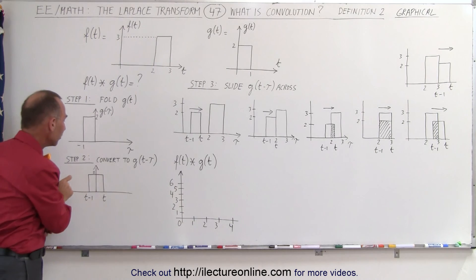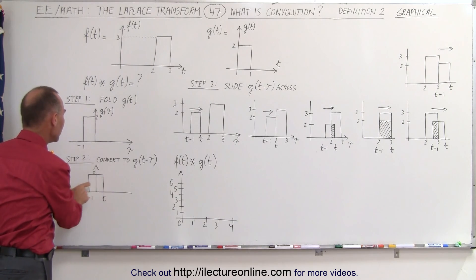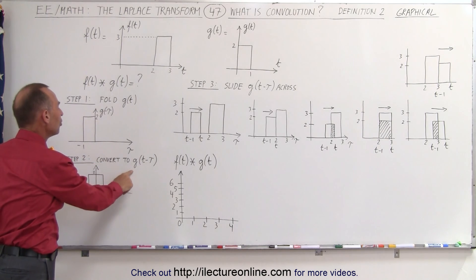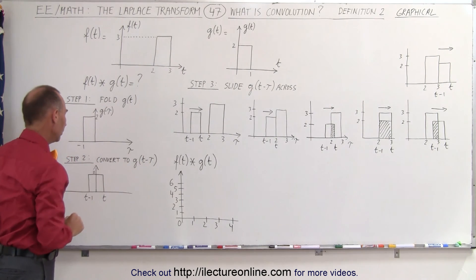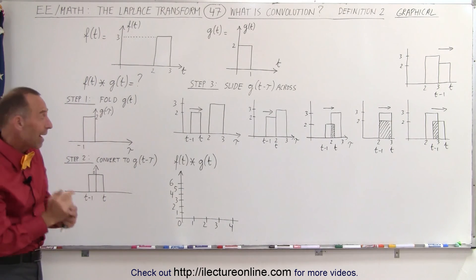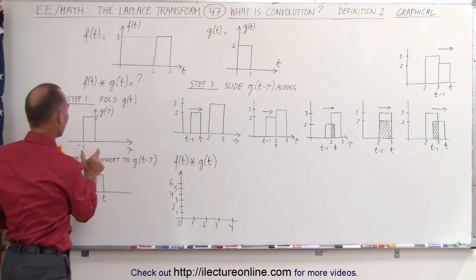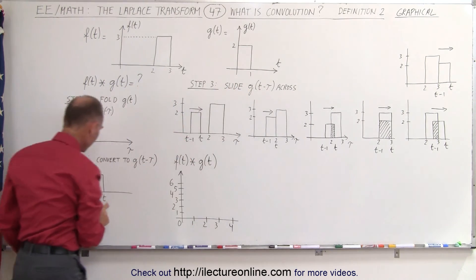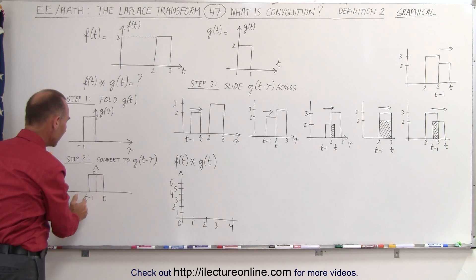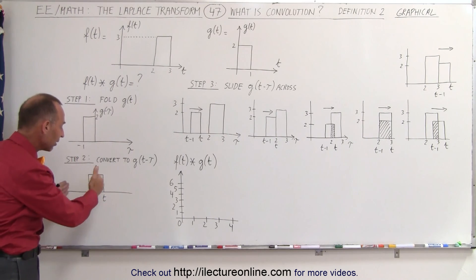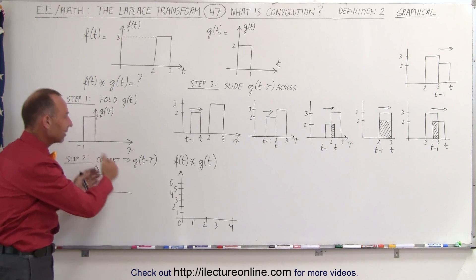Next, we're going to begin to slide g of t across. We're going to convert the function to g of t minus tau, in such a way that the front end is t, and the back end is t minus 1, since the width is only equal to 1. The front end is going to be t and the back end is going to be t minus 1. And t, of course, is a constant value that's going to change as you slide this across.